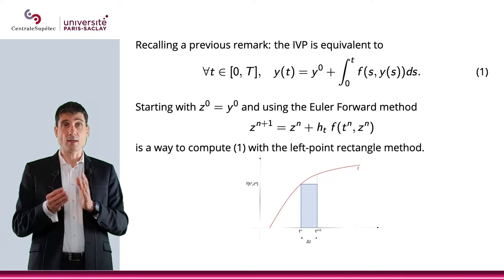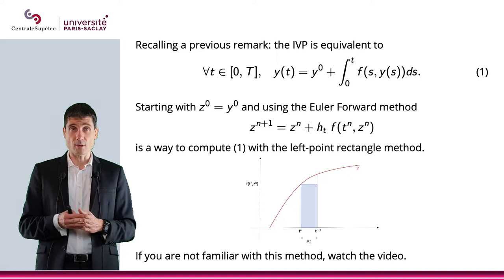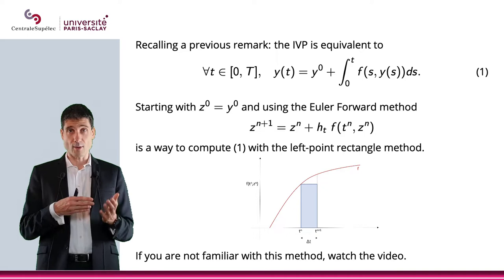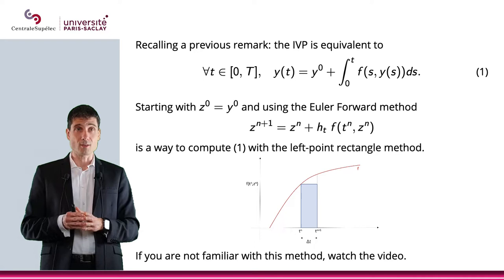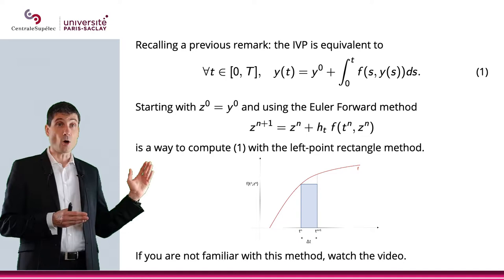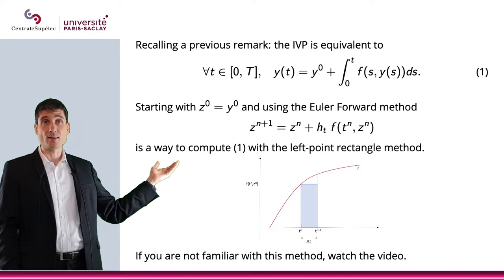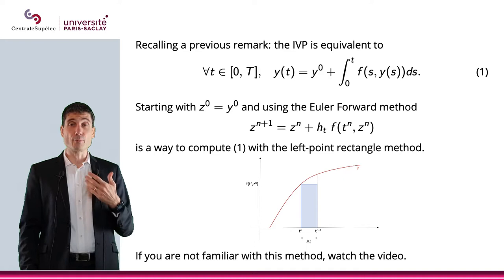This equation, if you look at what we're doing when we're doing z⁰ = y⁰ and using the Euler-Forward method, is really a way to compute the integral with the left point rectangle method. If you're not familiar with the left point rectangle method, or more generally the methods to approximate the integral with rectangles or trapezoids, then I suggest you watch the videos which I put a link there.